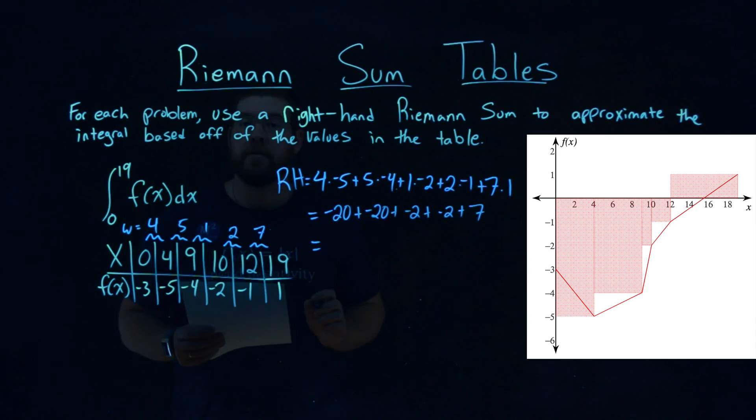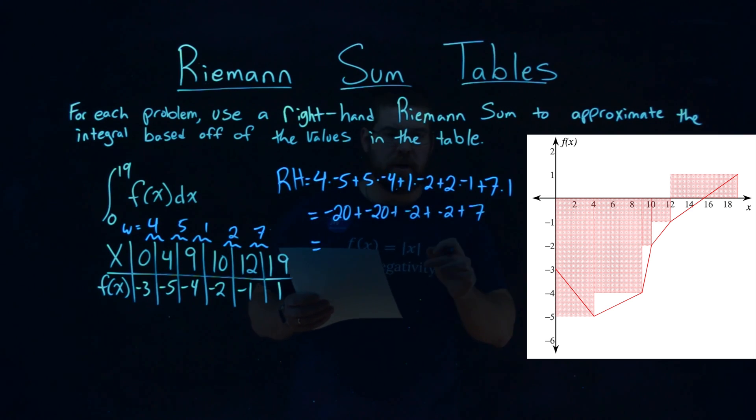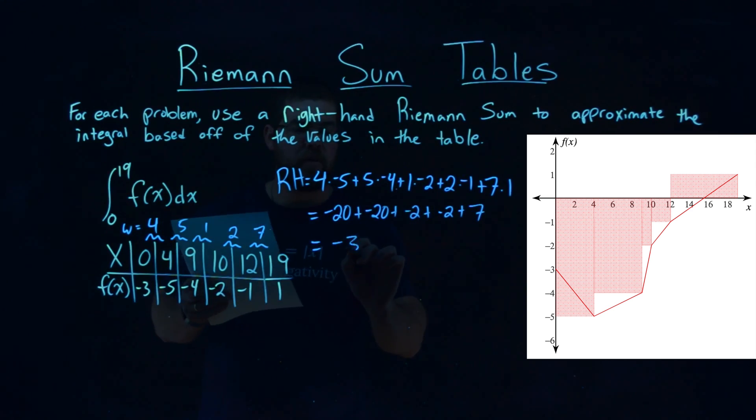So now we want to add all of these up. Remember, each one of these represents the area of each one of our rectangles. Add them all together, and we get the approximate area below. Negative 20 plus negative 20 plus negative 2 plus negative 2 plus 7 is negative 37.